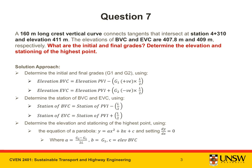The solution approach will be to first determine the initial and final grades, answering the first part of the question, using two equations. Then we will determine the elevation and stationing of the highest point. To do that we need to determine the station of BVC and EVC, and then solve the second part by using the equation of a parabola, setting the derivative to zero.